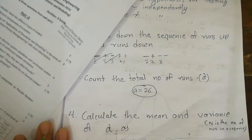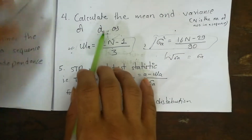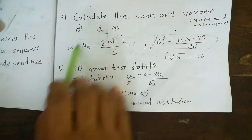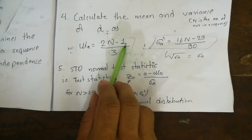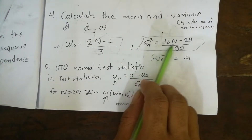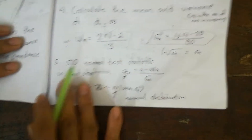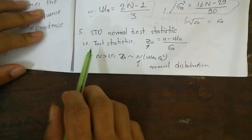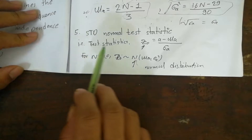Step 4 is to calculate the mean and variance of the number of runs. The formula for the mean is: μ_a = (2n − 1) / 3. The formula for the variance is: σ²_a = (16n − 29) / 90. These are the standard formulas used in the run test.